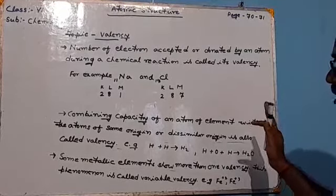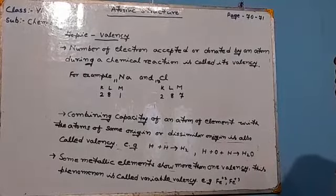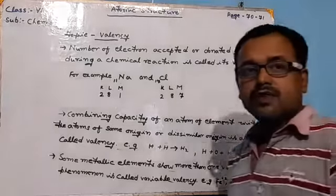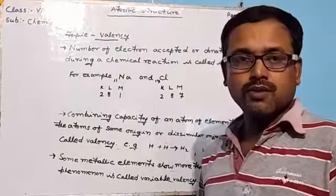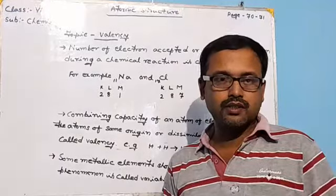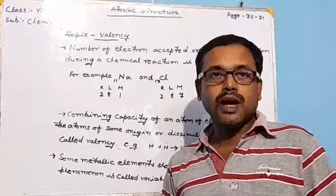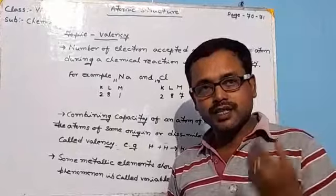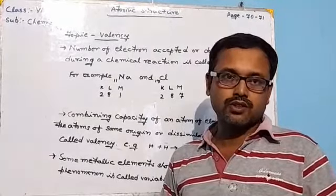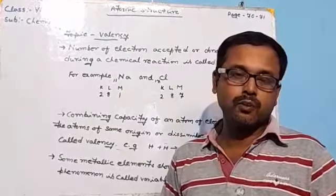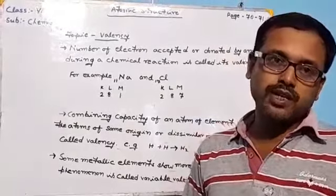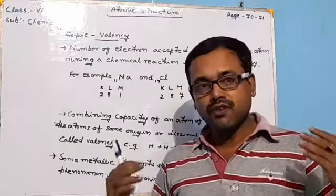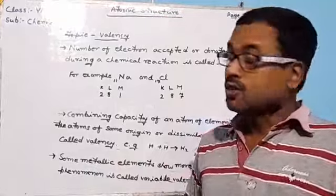Most atoms of elements are not stable in nature, but they try to attain stability by taking part in chemical reactions. During chemical reactions they either accept electrons or donate electrons so that they can fulfill their duplet or octet, which is the main requirement for physical or natural existence.